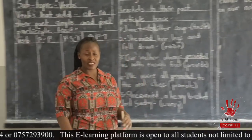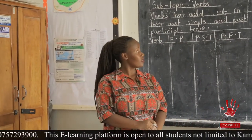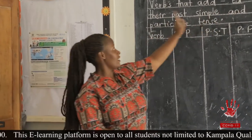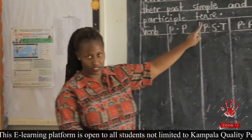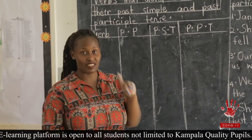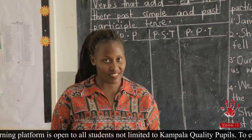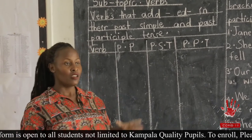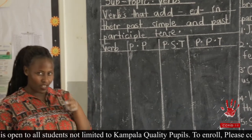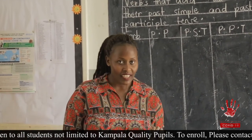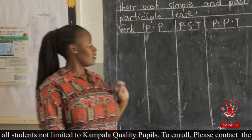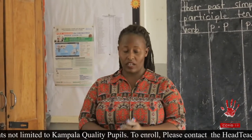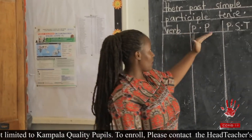Okay, now this brings us to today's lesson. We are going to learn verbs that add ED in their past simple and past participle. Remember, first we looked at words that add D, and later we looked at words that add IED. So today we are looking at verbs that add only ED at the end. These words are very many, but we will look at some examples according to their tenses.